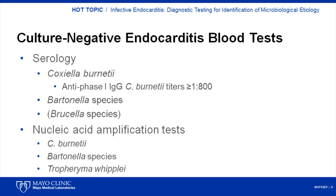For some organisms that do not grow or do not easily grow in routine blood cultures, serologic evaluation can be helpful. Organisms for which serologic tests have been shown to aid in the diagnosis of endocarditis include Coxiella burnetii, Bartonella species, and, in areas where Brucella endocarditis occurs, Brucella species. Serology for Coxiella burnetii is the best established serologic test for the diagnosis of endocarditis and is included as a major criterion in the modified Duke criteria. In chronic Q fever endocarditis, anti-phase 1 IgG Coxiella burnetii titers greater than or equal to 1:800 are diagnostic. Nucleic acid amplification tests performed on blood can be helpful for diagnosis of Coxiella burnetii, Bartonella species, and Tropheryma whipplei endocarditis, but their sensitivity is imperfect. Although testing of cardiac valve tissue is more sensitive than testing blood, a PCR result on blood is helpful when positive.